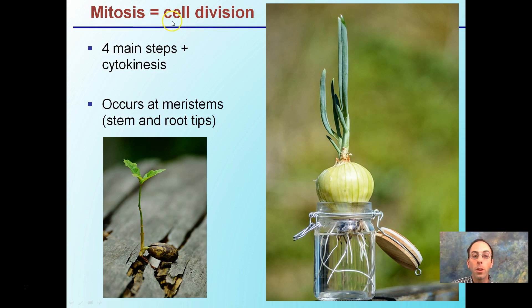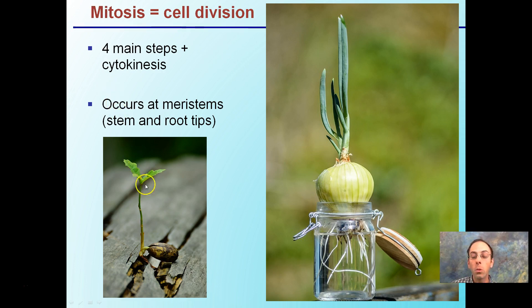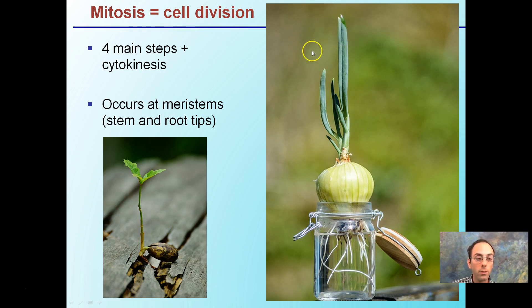Mitosis is basically cell division, with four main steps plus cytokinesis as a somewhat separate final step. It occurs in the meristems — stem tips and root tips — where there are a lot of actively dividing cells. It can occur at other parts throughout the plant, but these are the areas where you're most likely to find a high rate of cell division.